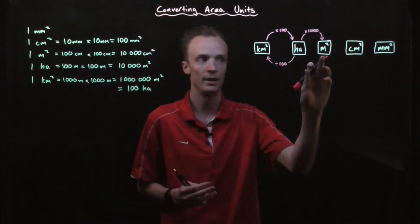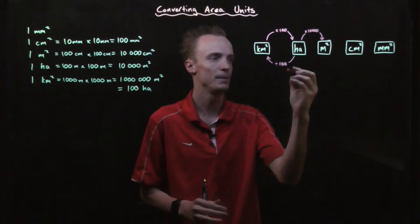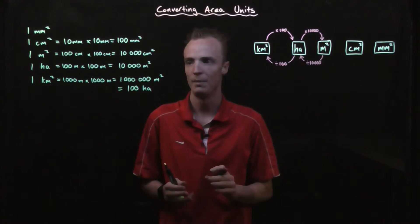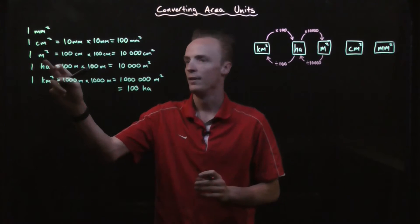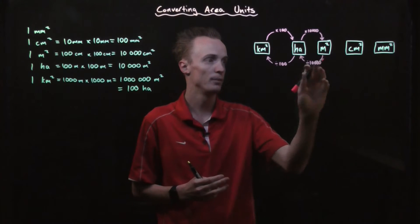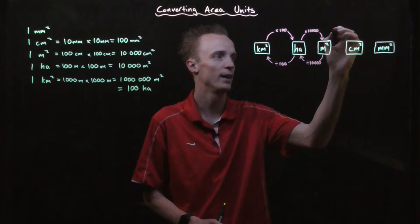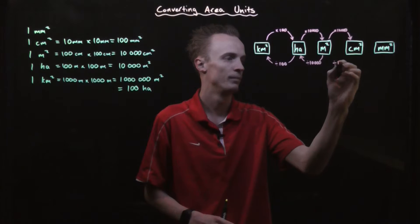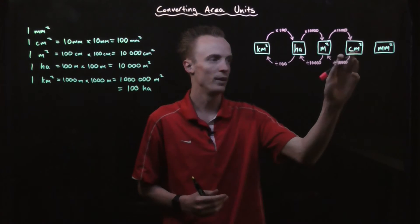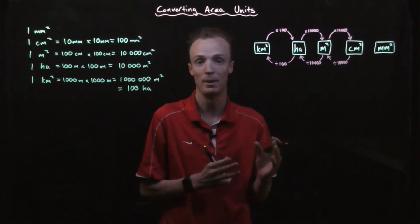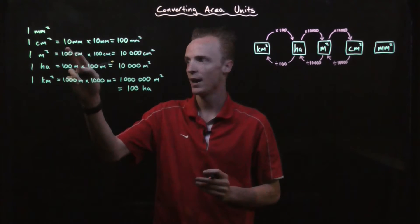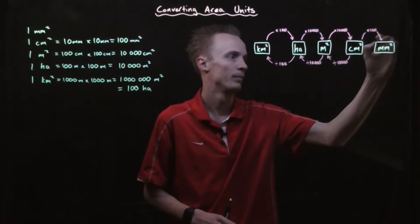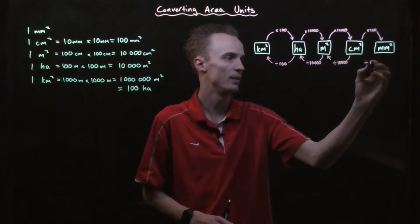To move from square metres back to hectares, I divide by ten thousand. From square metres to square centimetres, there are ten thousand square centimetres in a square metre, so I multiply by ten thousand. To get back I divide by ten thousand. To move from square centimetres to square millimetres, one square centimetre is one hundred square millimetres, so I'd multiply by one hundred. To convert back, I'd divide by one hundred.